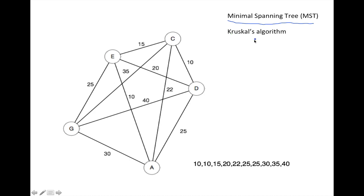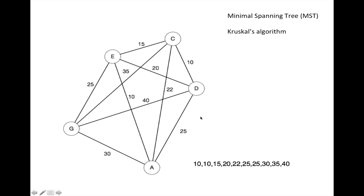There are many algorithms for finding the minimal spanning tree, and we're going to use a specific one called Kruskal's algorithm. What that algorithm says is: first, take all the edges and sort them according to their weight, starting with the least weight up to the highest weight. Then add the edges one at a time in that order — from smallest weight to highest — as long as no cycle is created.